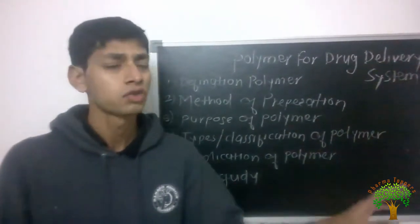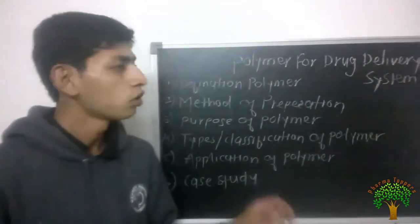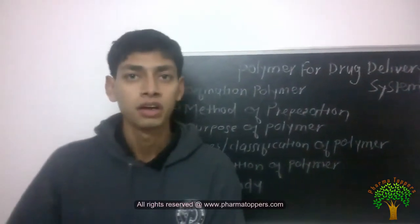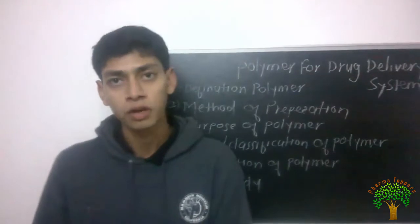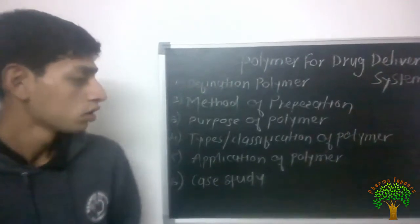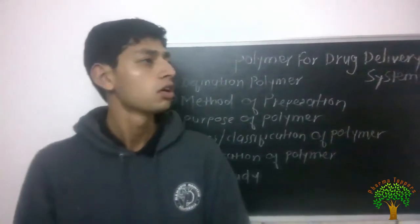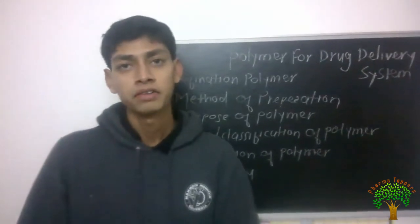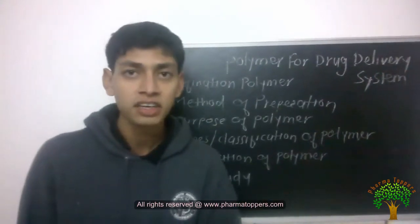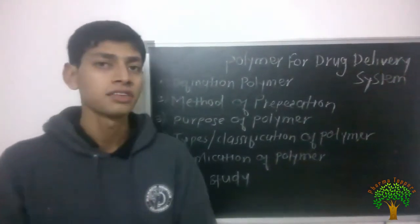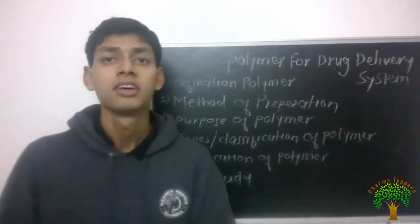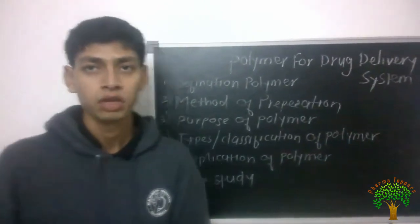Moving towards the status and classification of polymers — polymers can be classified in many ways. On the basis of source, we can classify them as natural, semi-synthetic, and synthetic polymers. On the basis of solubility, polar and non-polar polymers are available. On the basis of tacticity — which refers to the geometrical orientation of the molecule — polymers can be classified into three types: isotactic, syndiotactic, and atactic polymers.